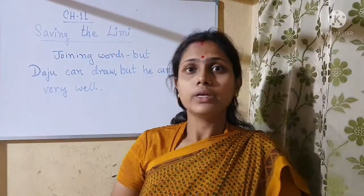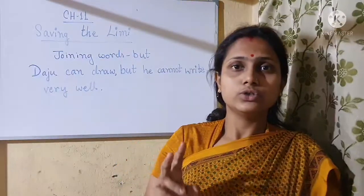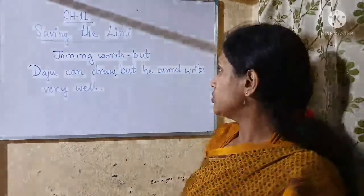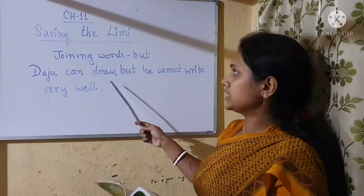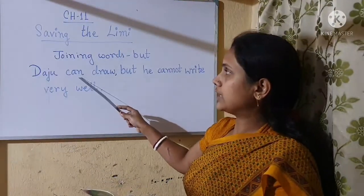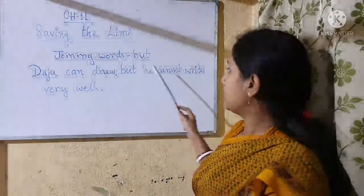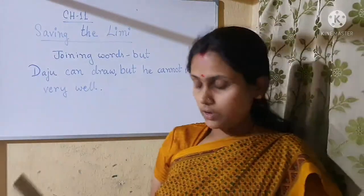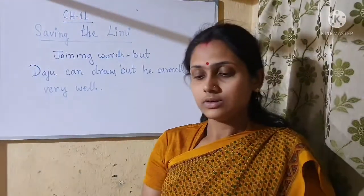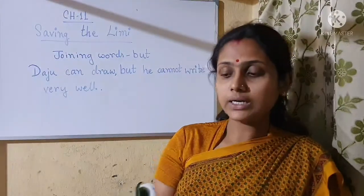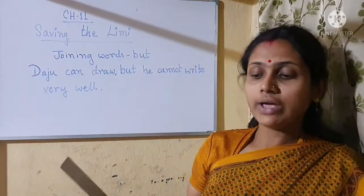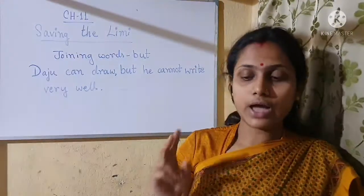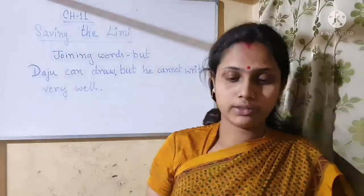So here you can get two opposite ideas. One is that Daju can draw nicely but he cannot write very well. So 'but' is a conjunction. We use 'but' when different types of ideas are put together.